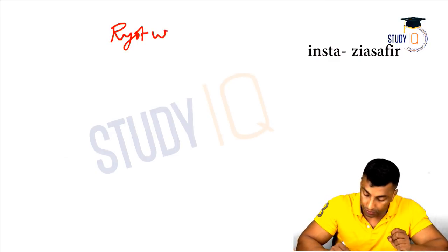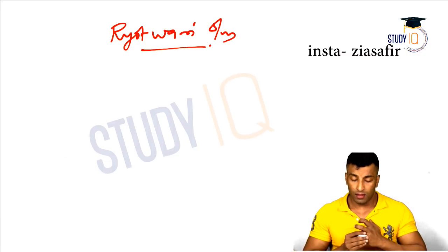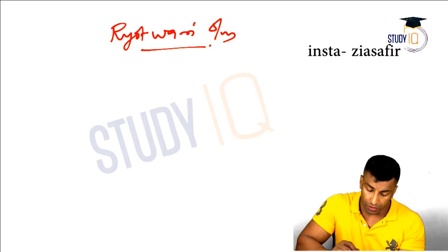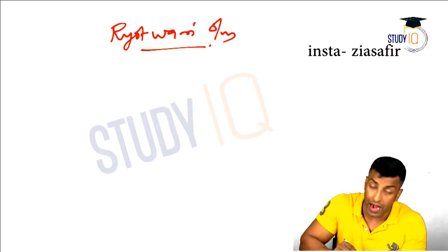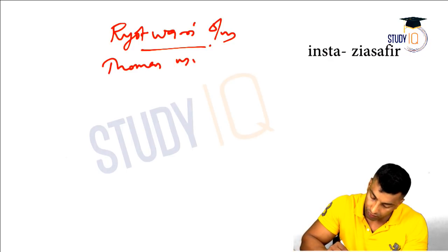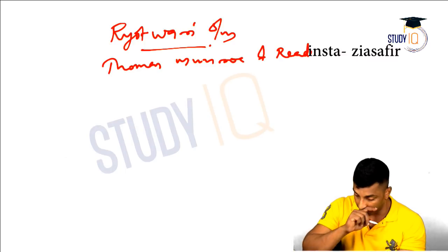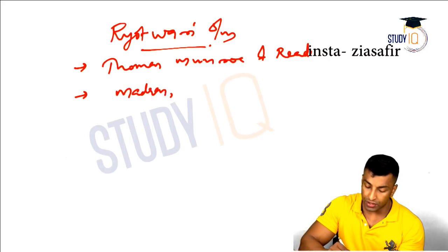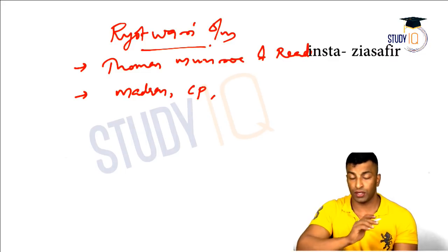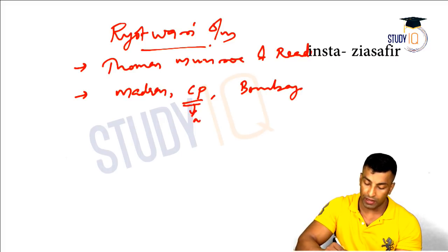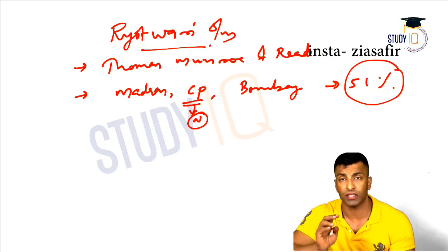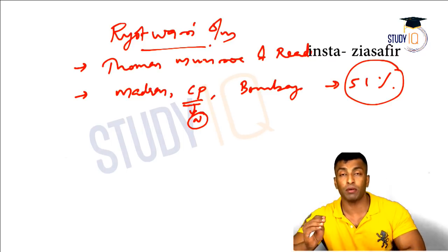Now let's move on to Ryotwari settlement. 'Ryot' is a Persian word meaning peasant. This system was introduced by Thomas Munro and Reid — this was a question in 2017. It was introduced in Madras, central provinces, and Bombay, covering 51% of British India — a huge area.